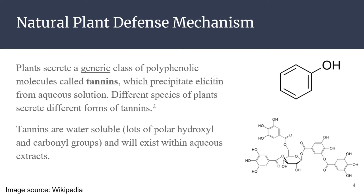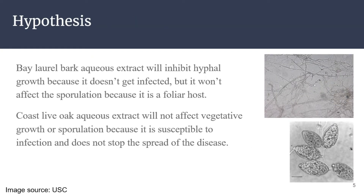What will happen is the P. remorum will secrete elicitin, but plants have a defense molecule called tannins. Tannins are a generic class of polyphenolic molecules — this just means that they have a bunch of phenols on them, and I have a picture of a generic phenol functional group in the top right corner. Different types of plants and trees are going to have different kinds of tannins with different arrangements of phenols and carbonyl groups, which may impact their potency in slowing P. remorum vegetative growth and sporulation. Tannins are also water soluble, so they dissolve into the aqueous phase of a solution and precipitate out the elicitin protein.